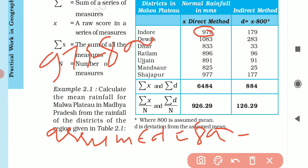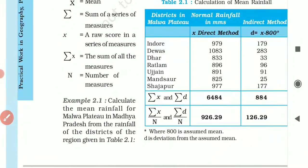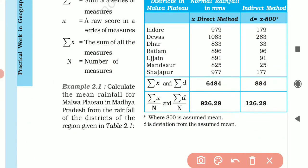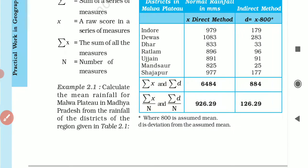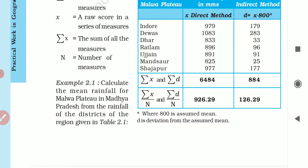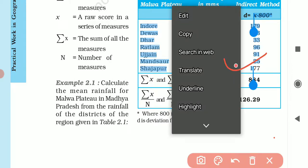979 minus 800 which is 179. 1083 minus 800 which is 283. This is the coding, the deviation from assumed mean. We will calculate all deviations and add them.